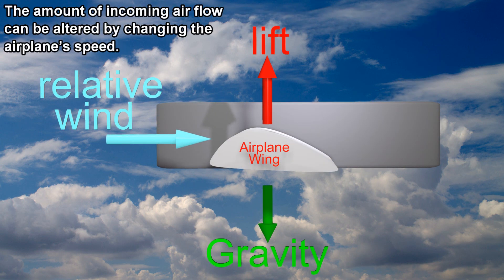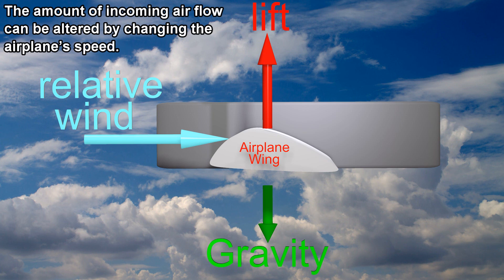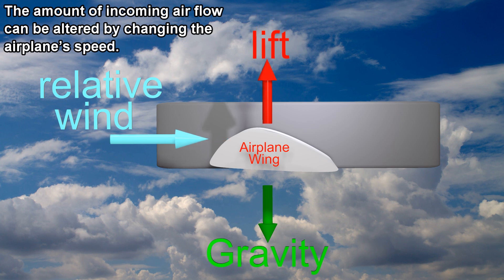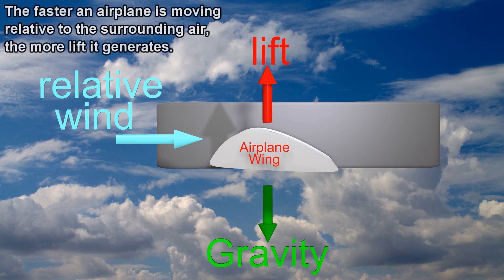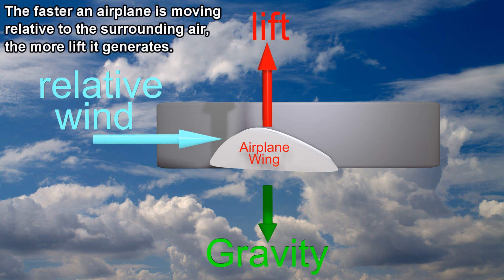The amount of incoming airflow can be altered by changing the airplane's speed. The faster an airplane is moving relative to the surrounding air, the more lift it generates.